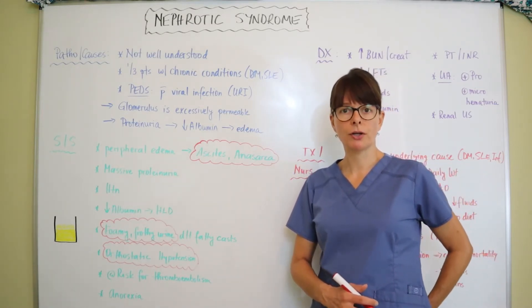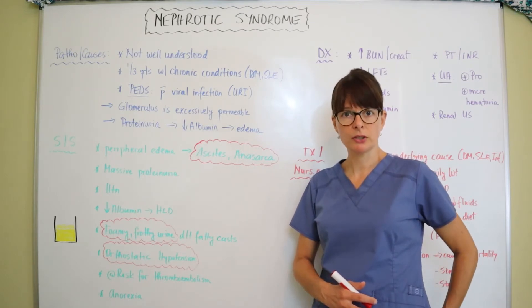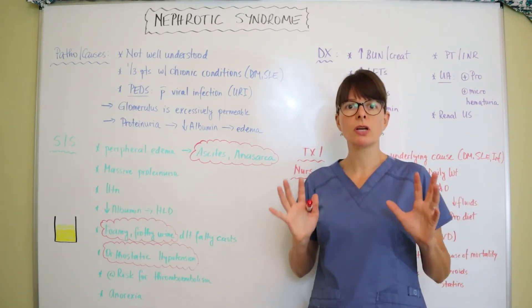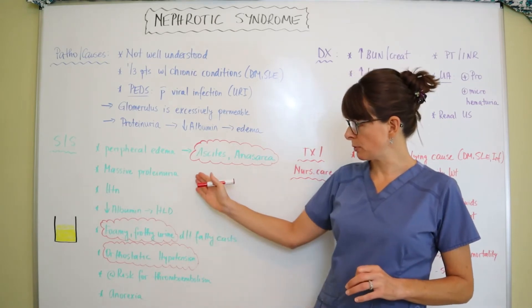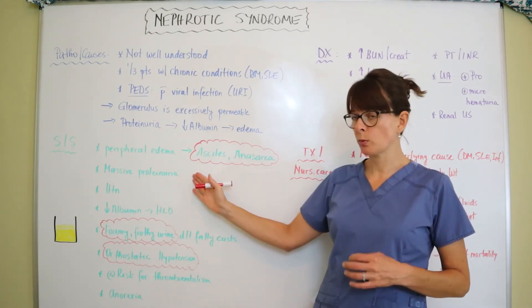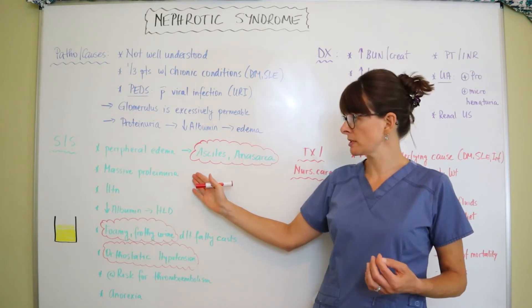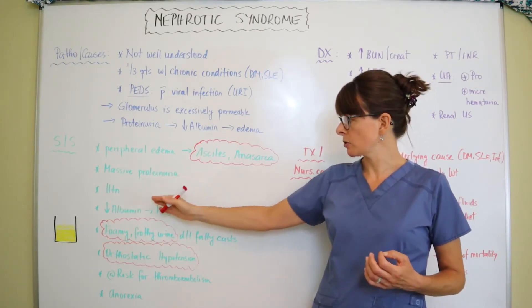Sometimes patients have dependent edema on their periphery, on their sacrum, and it's just really, really significant. This massive proteinuria is what causes it, that we can certainly also see in the urine sample, and then it also leads to hypertension.